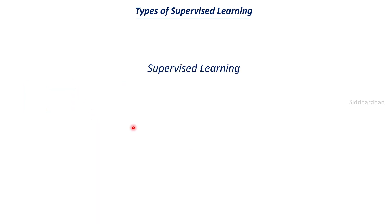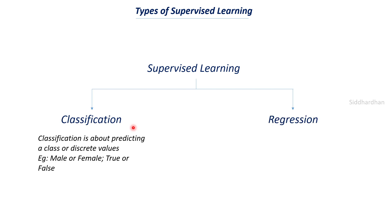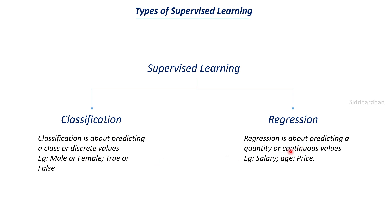There are two main types of supervised learning: classification and regression. Classification is about predicting a class or discrete values, whereas regression is about predicting a quantity or continuous value. Discrete values are fixed — it is like classifying an object. For example, we can classify a person as male or female based on features, or classify a person based on whether they have diabetes or not. True or false, or male or female — these are all discrete values and examples of classification.